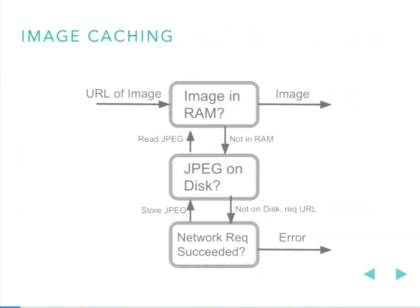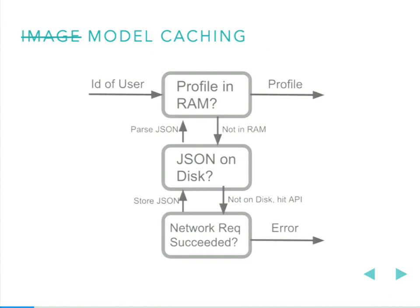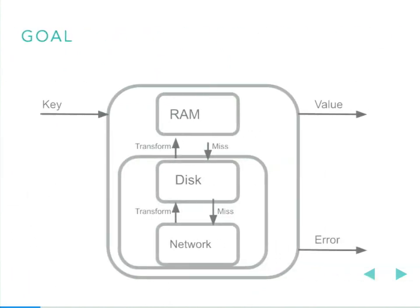More concretely, we could have an image cache where URLs come in, we check for a bitmap in RAM, and we check for a JPEG on disk. In a mobile app, you may also have videos — usually your framework handles the memory layer, so we only check disk before hitting the network. We also have metadata we're caching, like user profiles: a user ID comes in, we check for structured profile data in memory, and then check for JSON on disk.